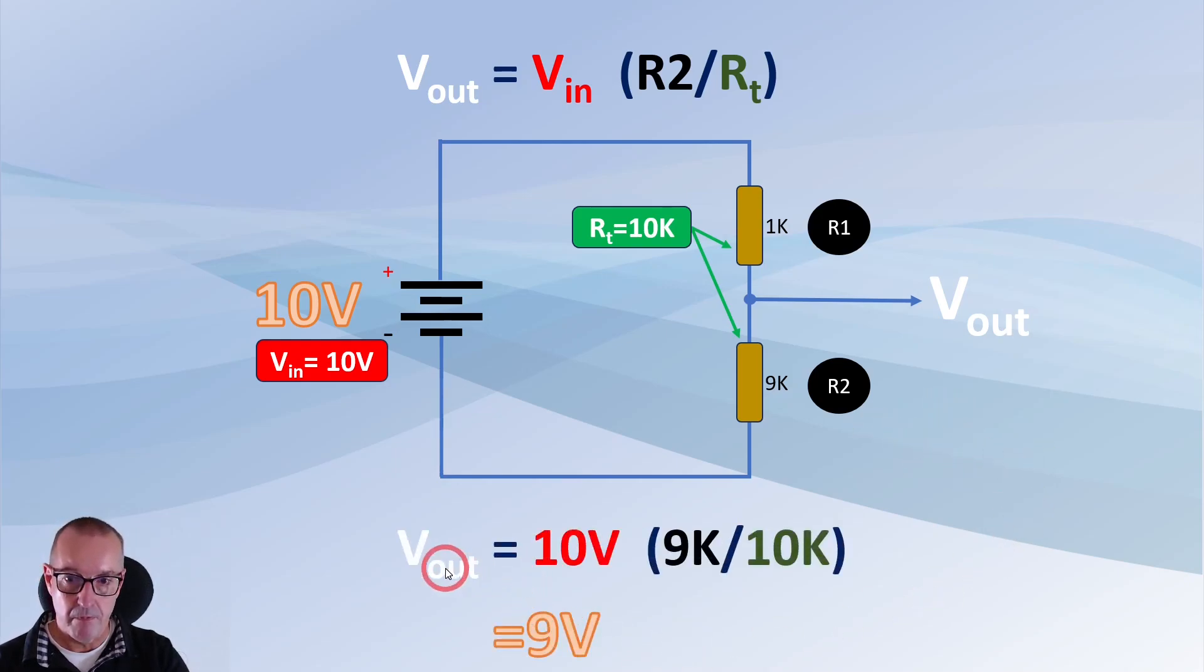So our voltage out as before we start with 10 volts. We've got 9k resistance at R2. Divide that by our total resistance which is 10k equals 9 volts. So if we change that to a 1 ohm and a 9 ohm rather than 10k sorry rather than 1k and 10k exactly the same thing. The proportions are the same. It's 1 and 9 giving us 9 over a total of 10.